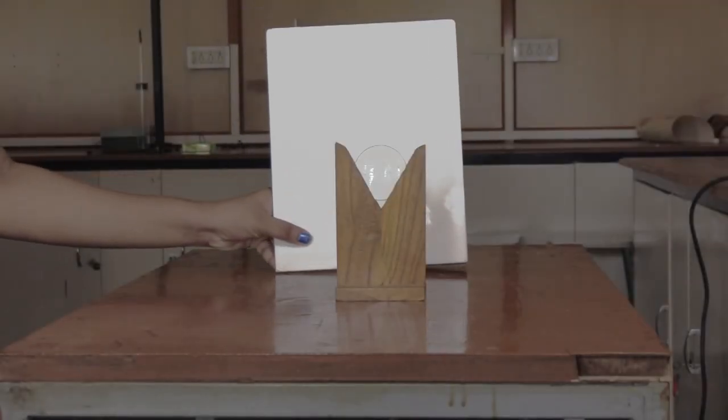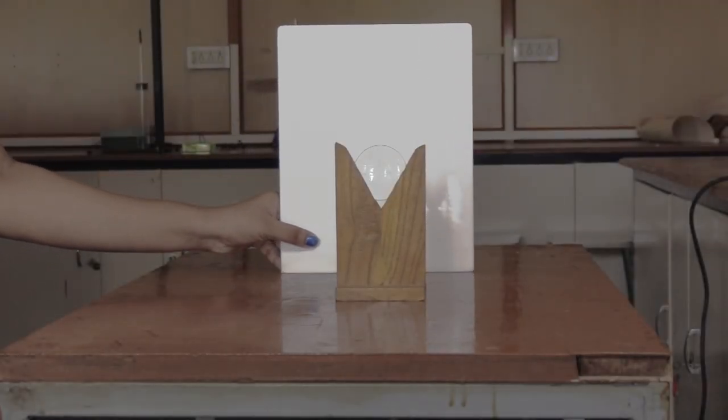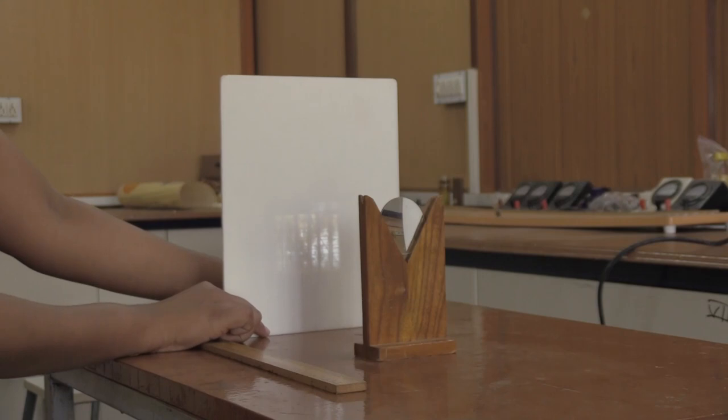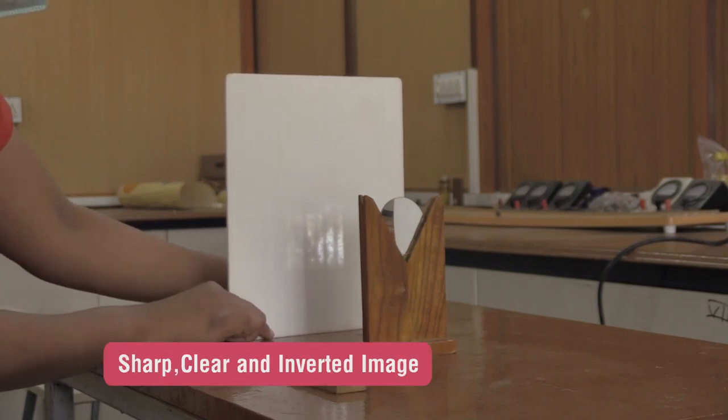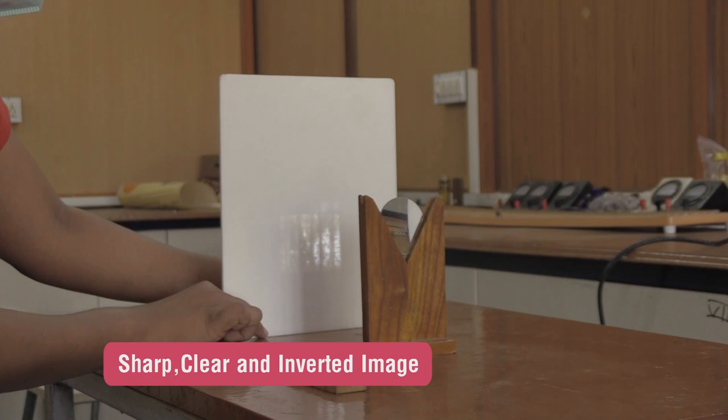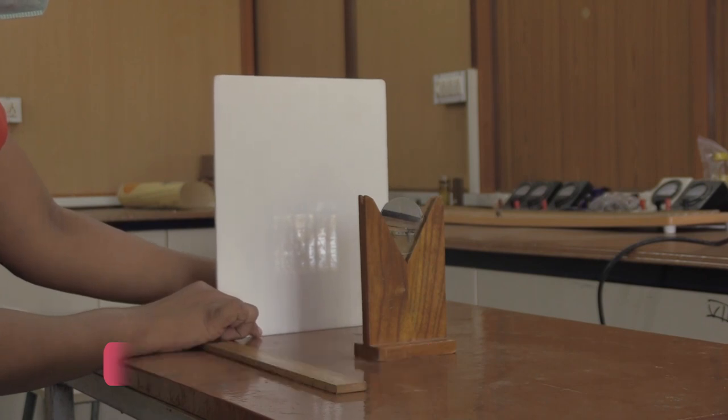Place a screen fixed on a stand on the other side of the lens. Move the screen back and forth to obtain a sharp, clear and inverted image of the distant object.